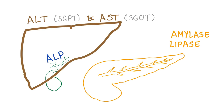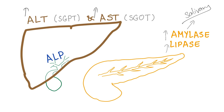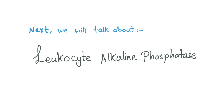This slide is a big deal — what's the difference between ALT, AST, alkaline phosphatase, amylase, and lipase? For liver disease, expect high levels of ALT and AST — alanine aminotransferase and aspartate aminotransferase. In biliary disease, expect high levels of alkaline phosphatase. In pancreatic disease, expect high levels of amylase and lipase. Amylase is more sensitive; lipase is more specific, because amylase is also found in saliva, so it's not specific to the pancreas.